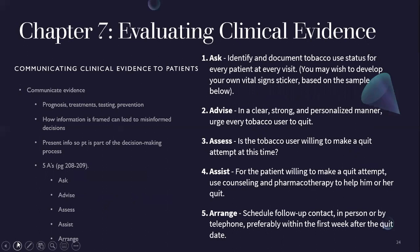Chapter 7 covers communicating clinical evidence to patients. The Five A's model — using smoking cessation as an example — is: Ask the patient at every visit if they want to quit; Advise them to quit; Assess if they're willing to quit; if so, provide Assistance; and then Arrange follow-up contact, preferably within the first week after the quit date.